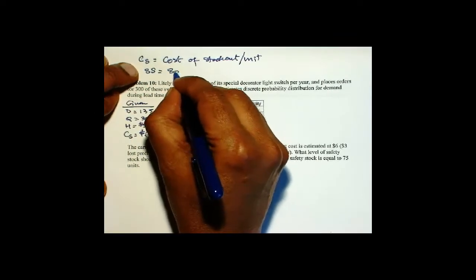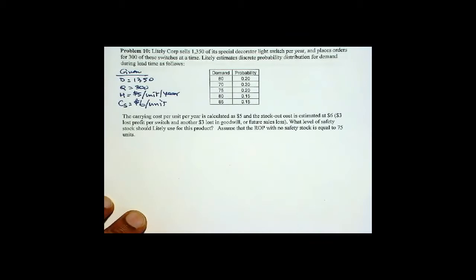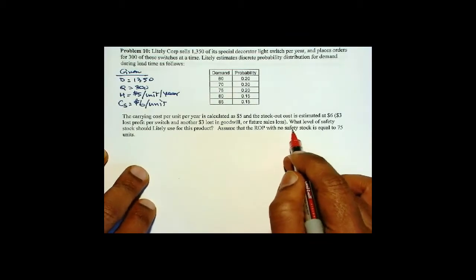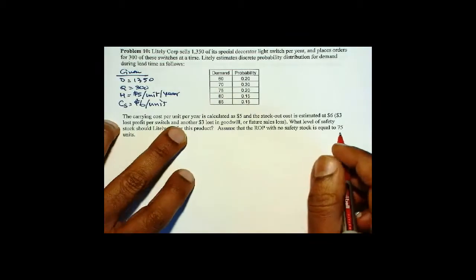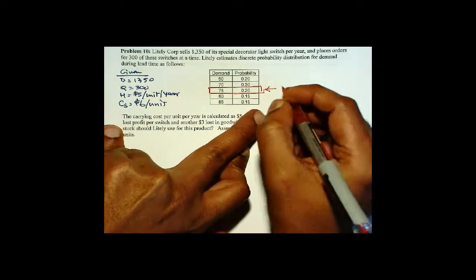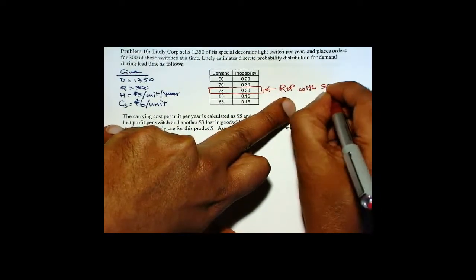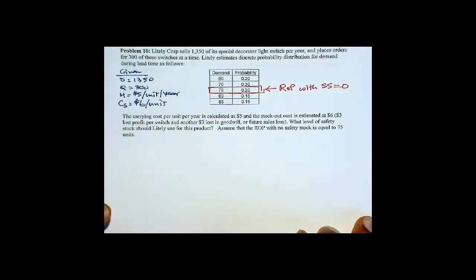We will use the notation SS for safety stock. We are given in the problem that the ROP with no safety stock equals 75, so this is our ROP with safety stock equal to 0.